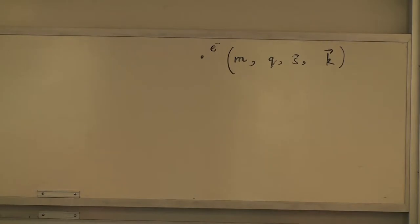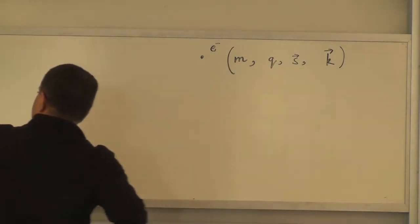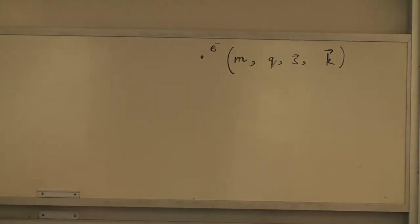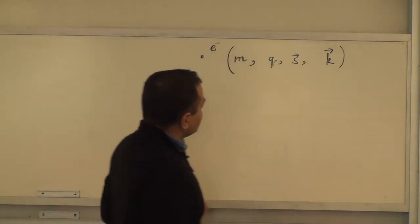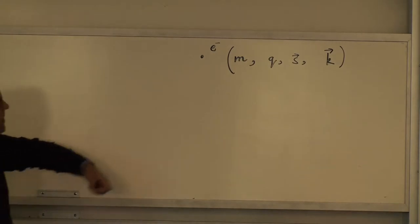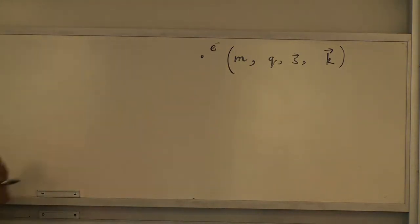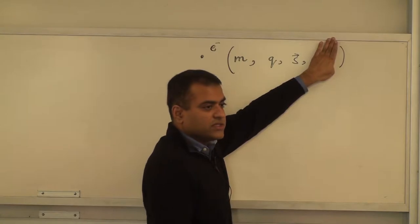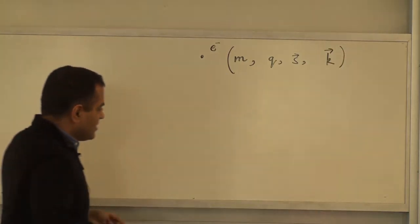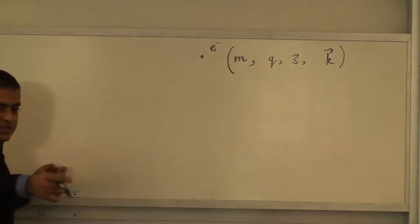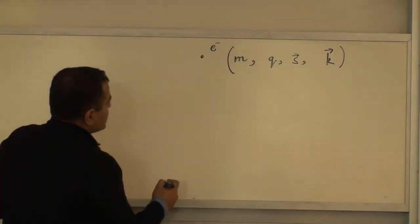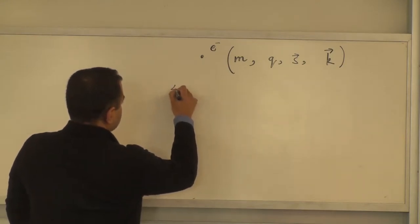The Chern number is not simply the number of occupied Landau levels — it's related to how many vortices there are, which we'll see. These four quantities — mass, charge, spin, and momentum — are intimately attached to an electron in a crystal. If you have just an individual atom, there is no K associated with it; K arises from the possibility of hopping between atoms in a lattice.